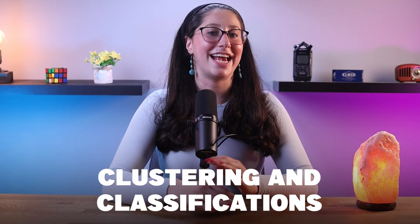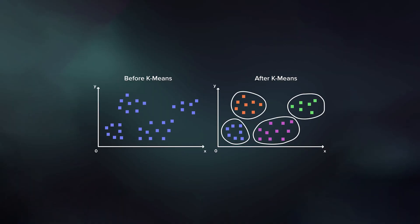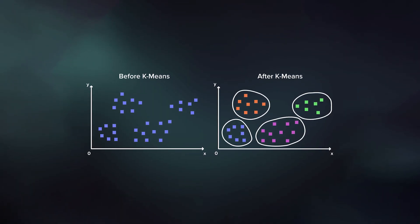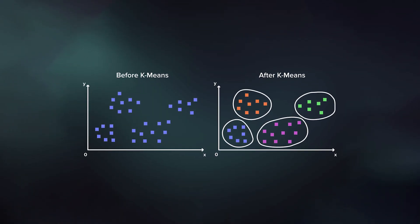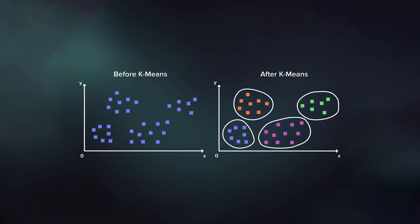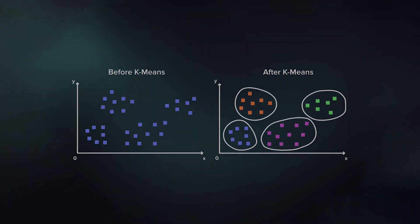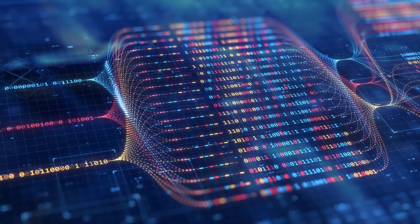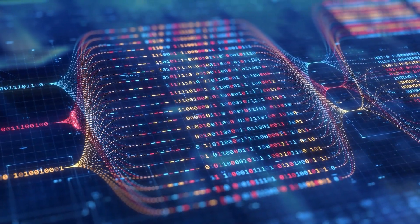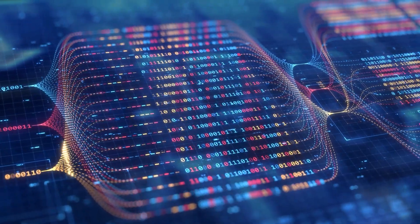Other than that, we have clustering and classification. Machine learning algorithms, including clustering and classification techniques, can group similar malware variants together. This allows security professionals to understand the relationships between different variants and leads to the identification of new polymorphic strains based on their similarities to known ones.